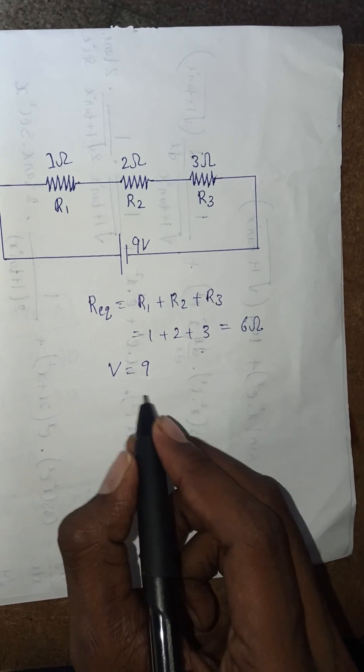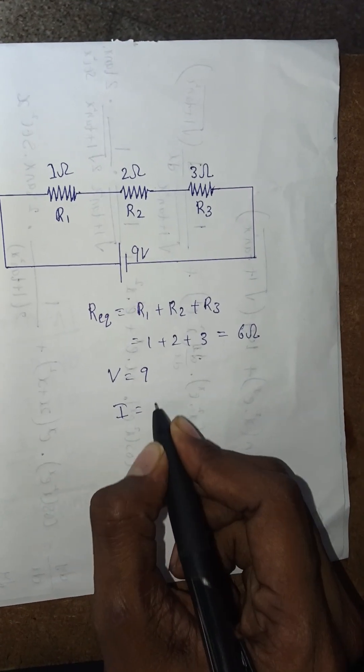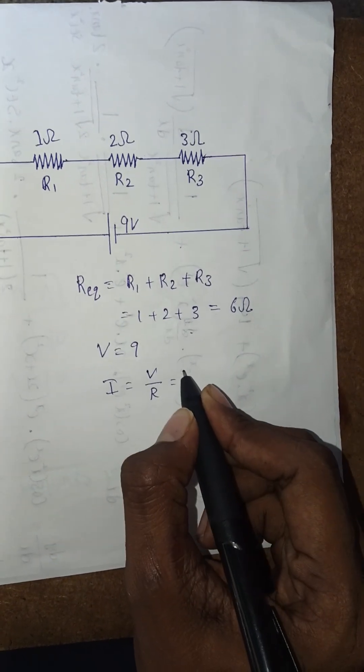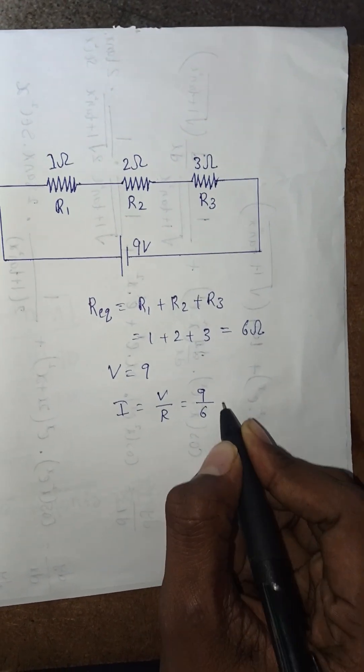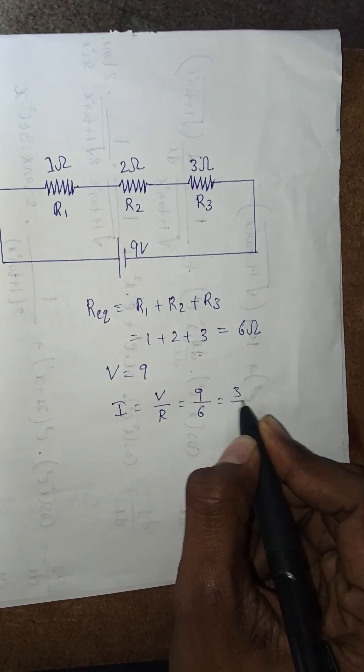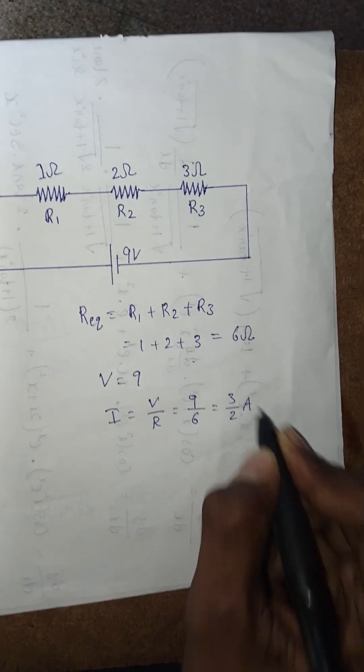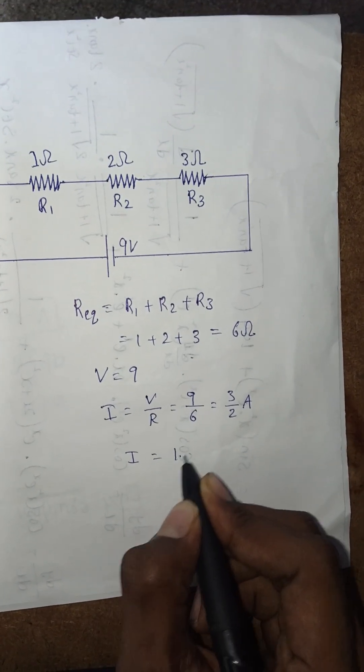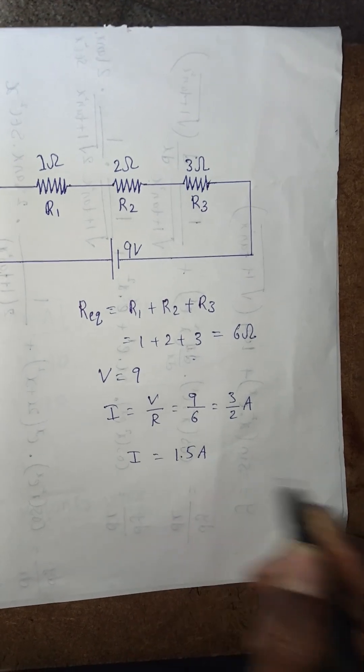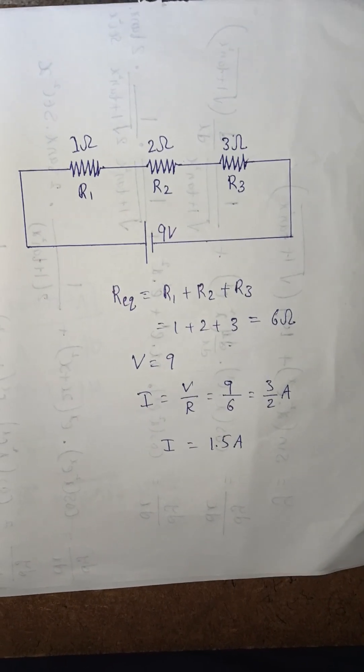Now the voltage V is 9 volts. According to Ohm's law, I equals V by R. So here V is 9 and resistance is 6, that is 3 by 2 amperes. If we take decimal points, I equals 1.5 amperes.